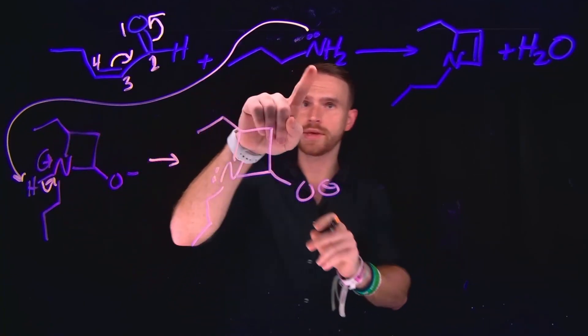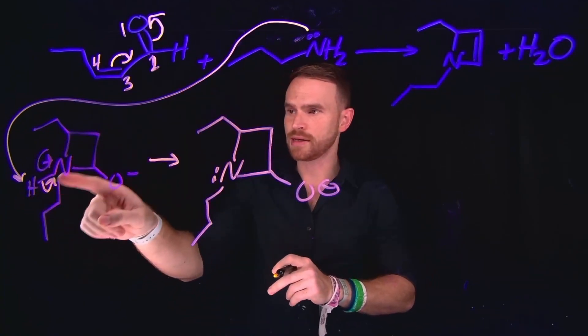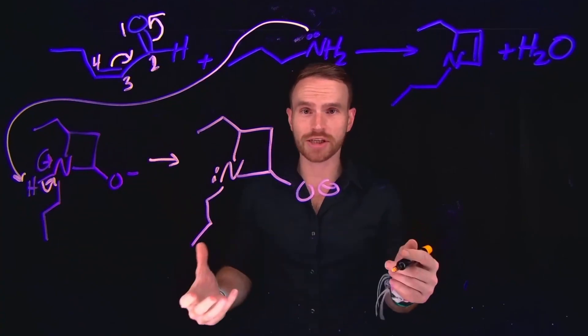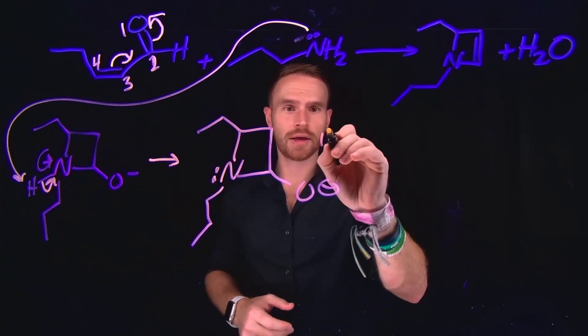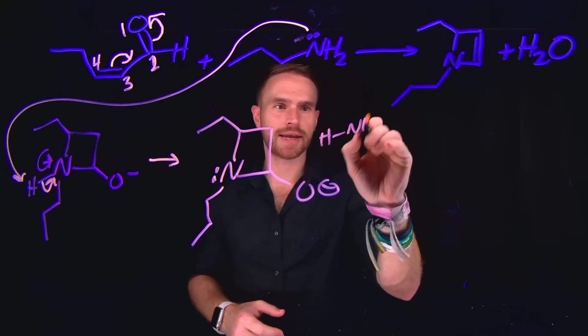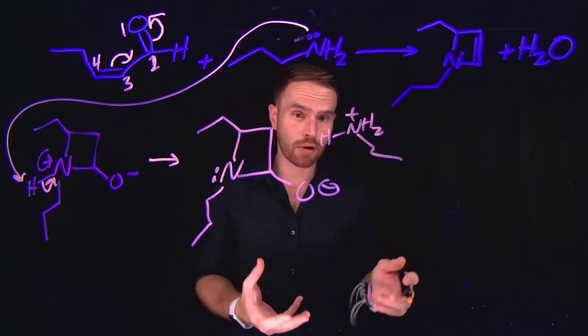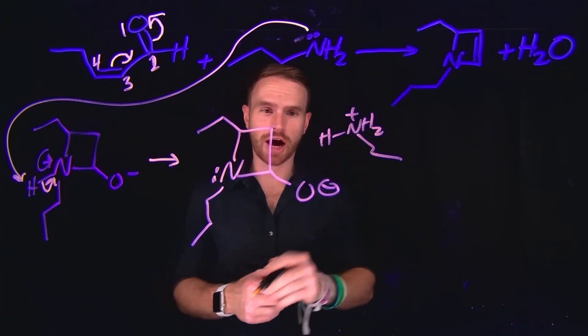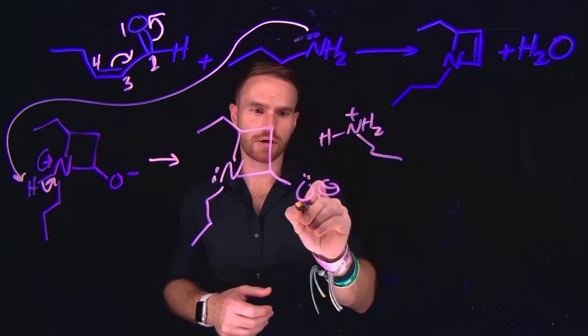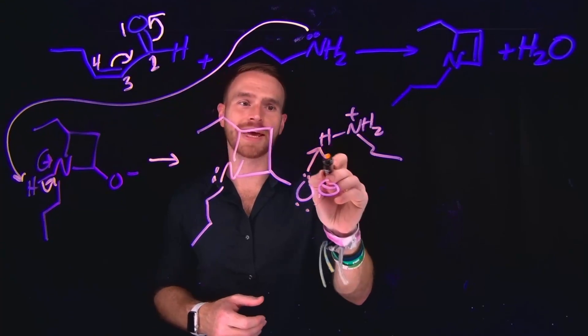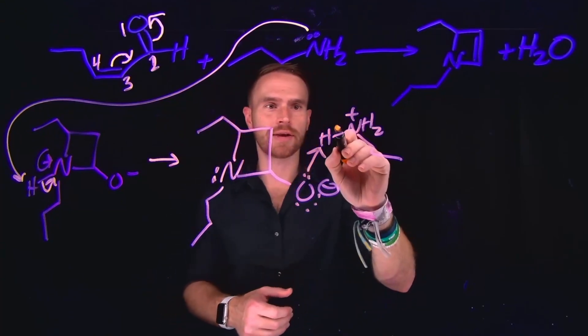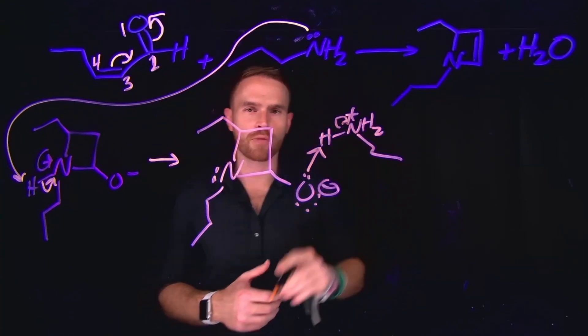Now in doing this step here, where the propyl amine deprotonated this nitrogen-hydrogen bond, this regenerated an ammonium ion. So now we have a nitrogen that is positively charged that can be deprotonated by this negatively charged oxygen. So from here, since there are three lone pairs, this can come in and abstract the hydrogen in order to regenerate our propyl amine.